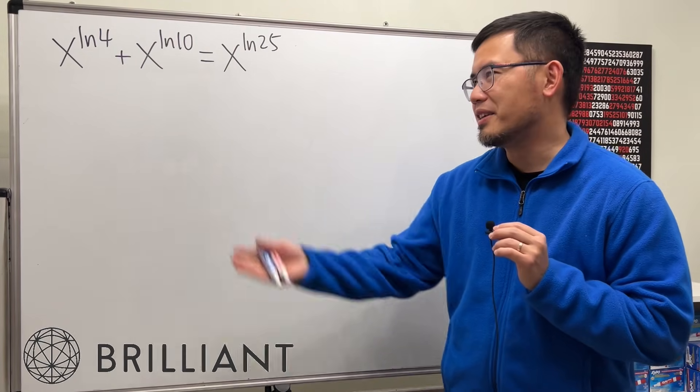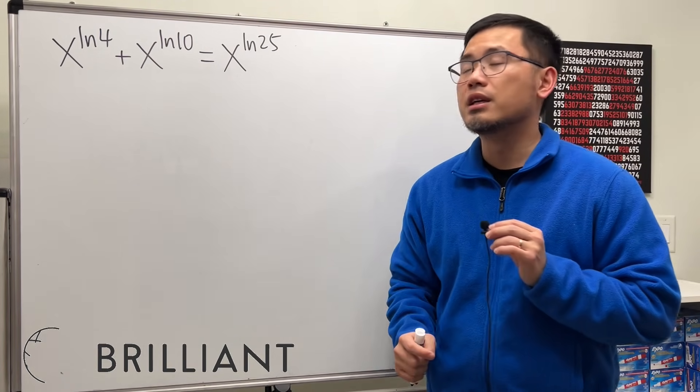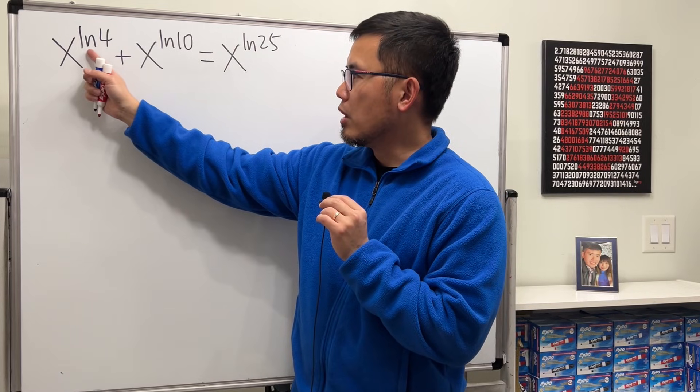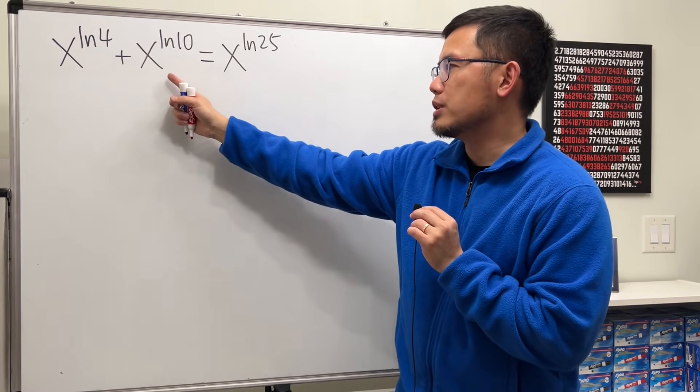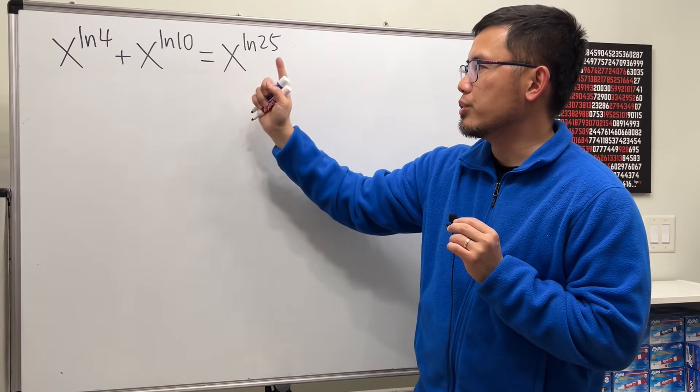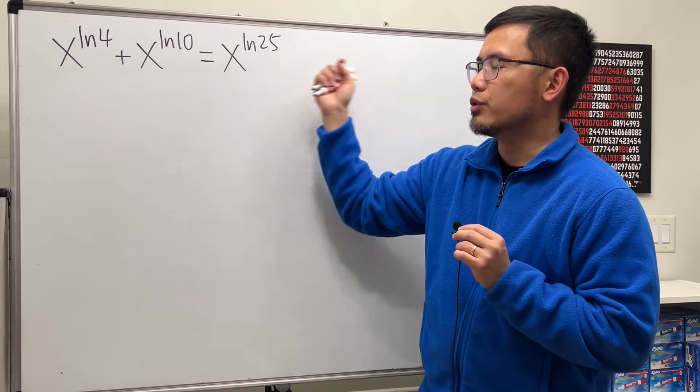Okay, let's do some math for fun, and here I have this power equation for you guys. We have x to the power of ln4 plus x to the power of ln10, and that's equal to x to the power of ln25.